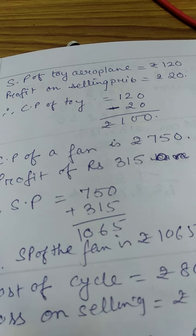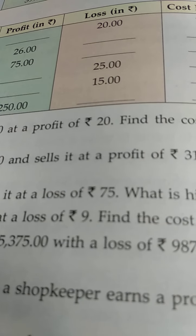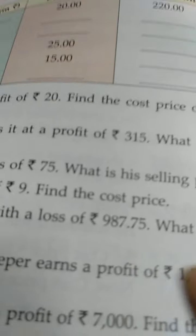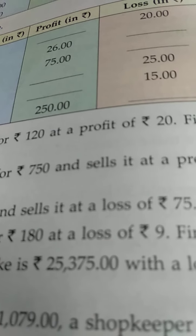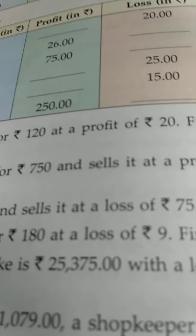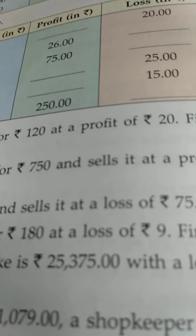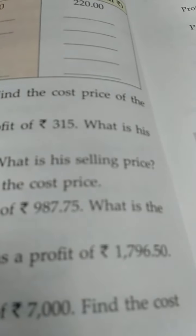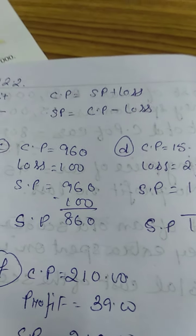So, next question. Raju buys a cycle for Rs. 800 and sells at a loss of Rs. 75. What is this? Selling price. That means whatever he have sold it, he had a loss of Rs. 75. CP minus loss.